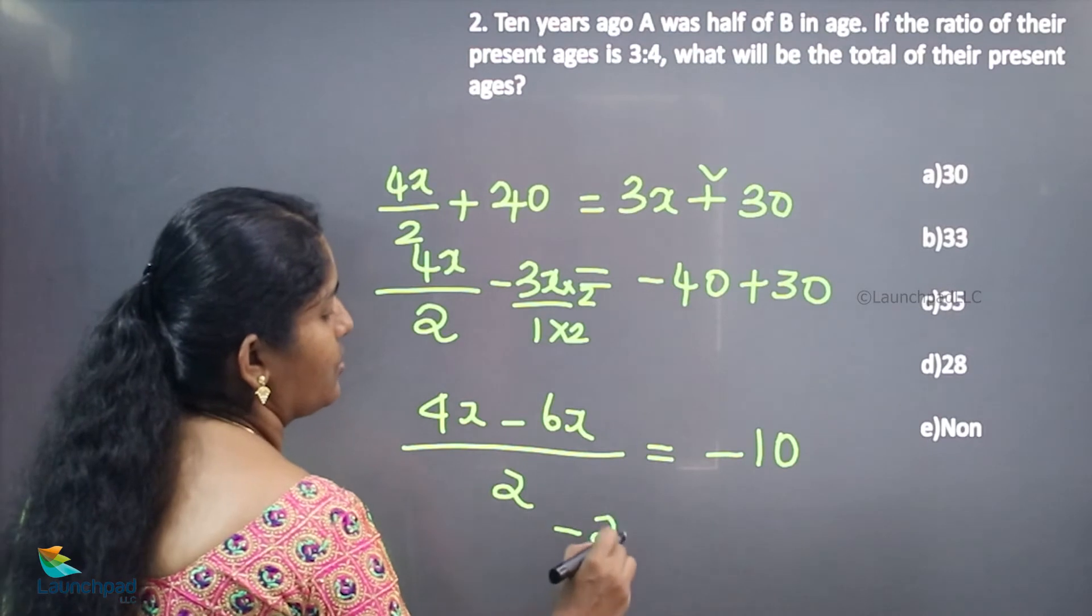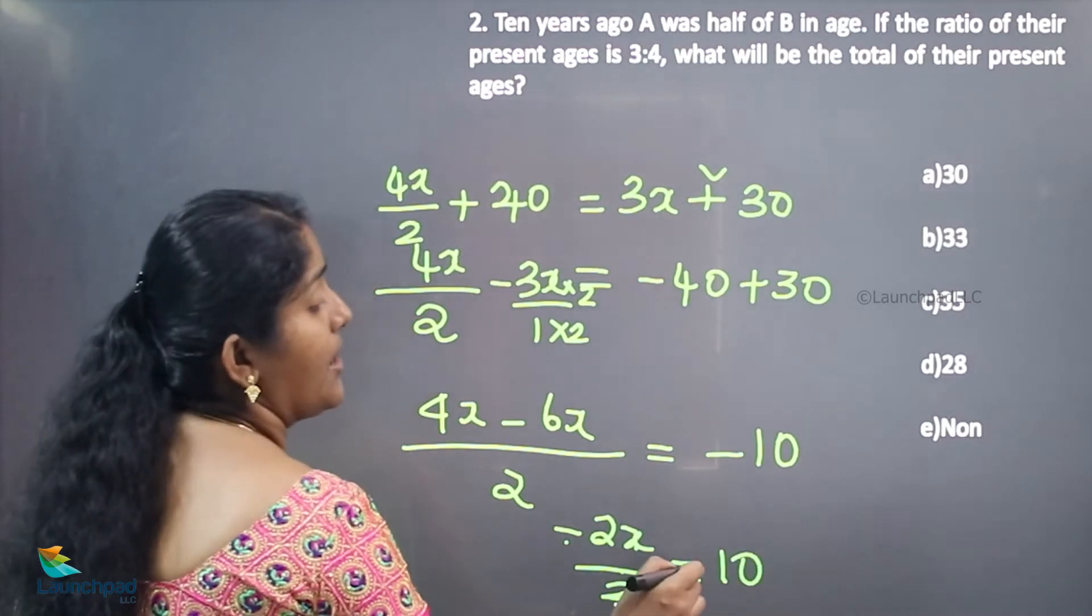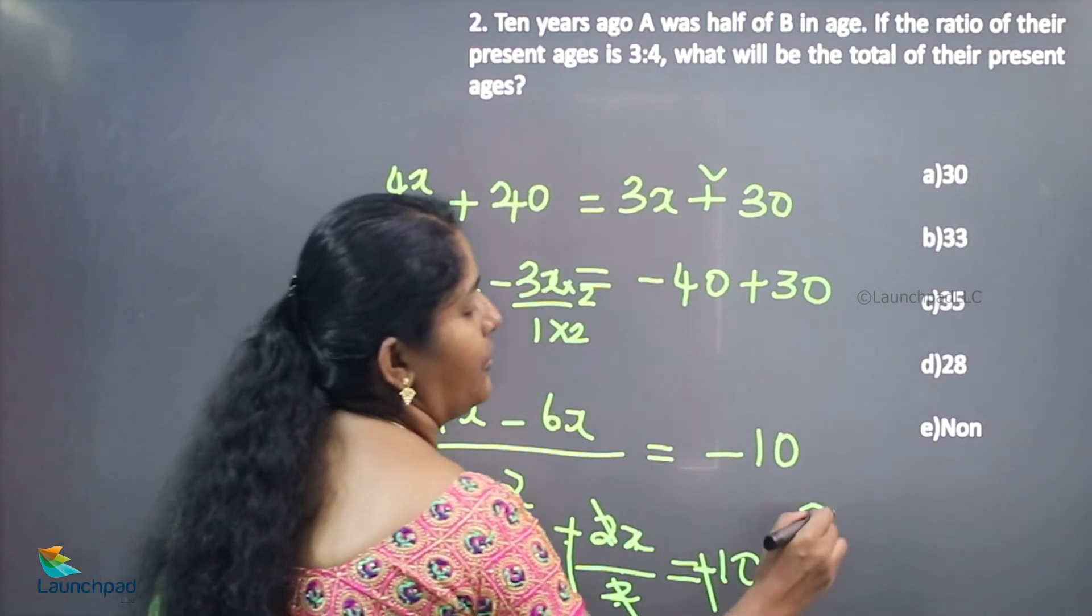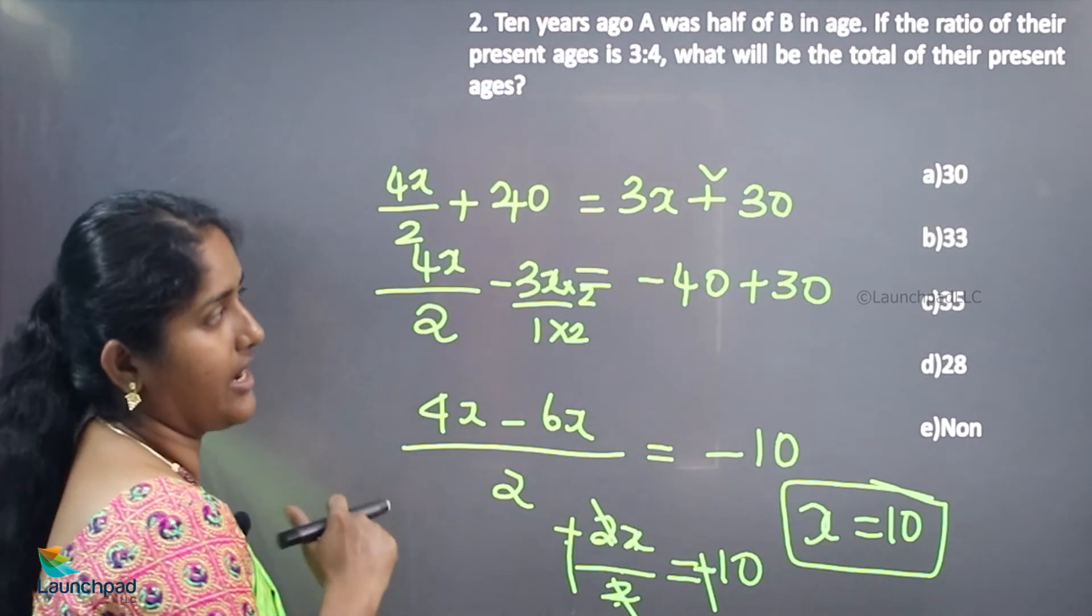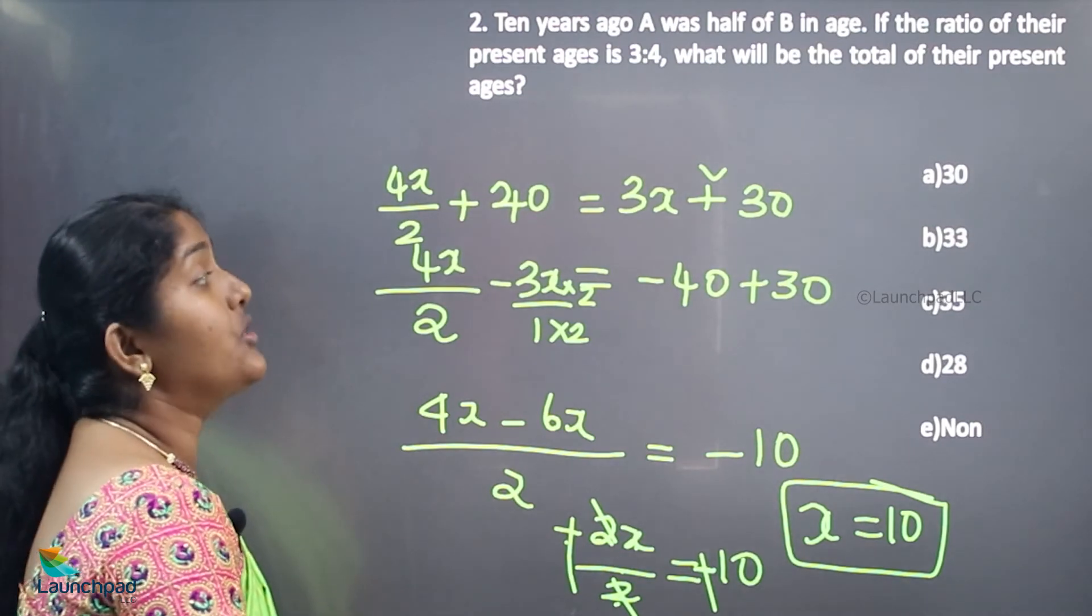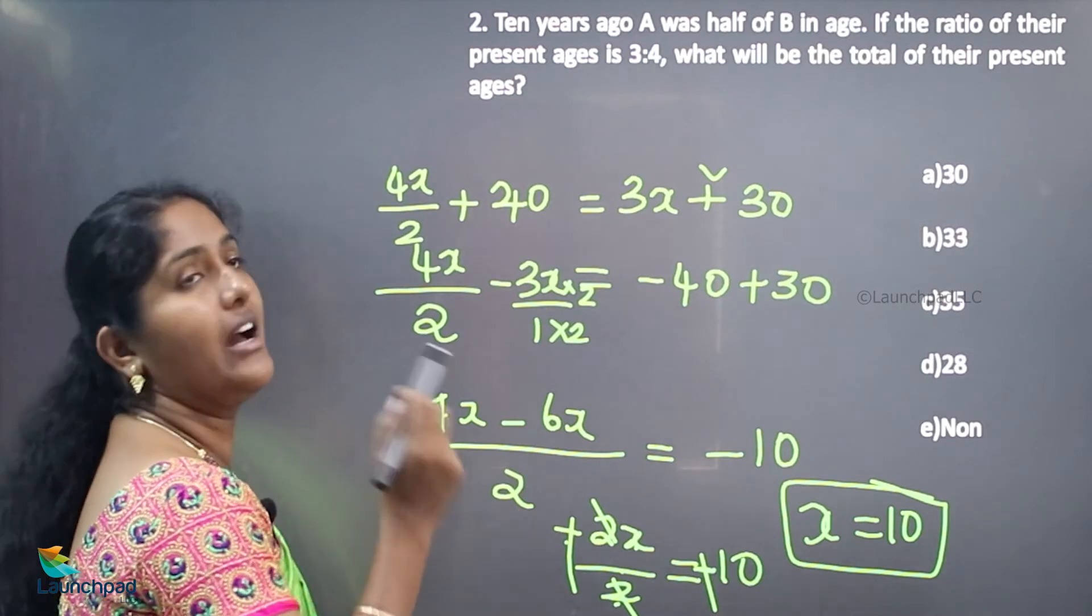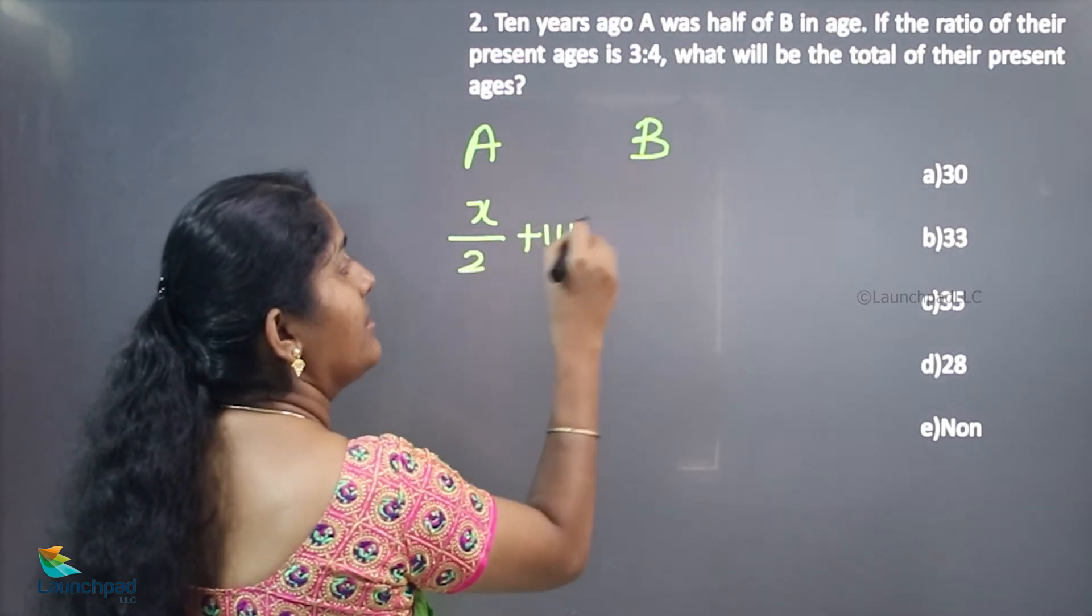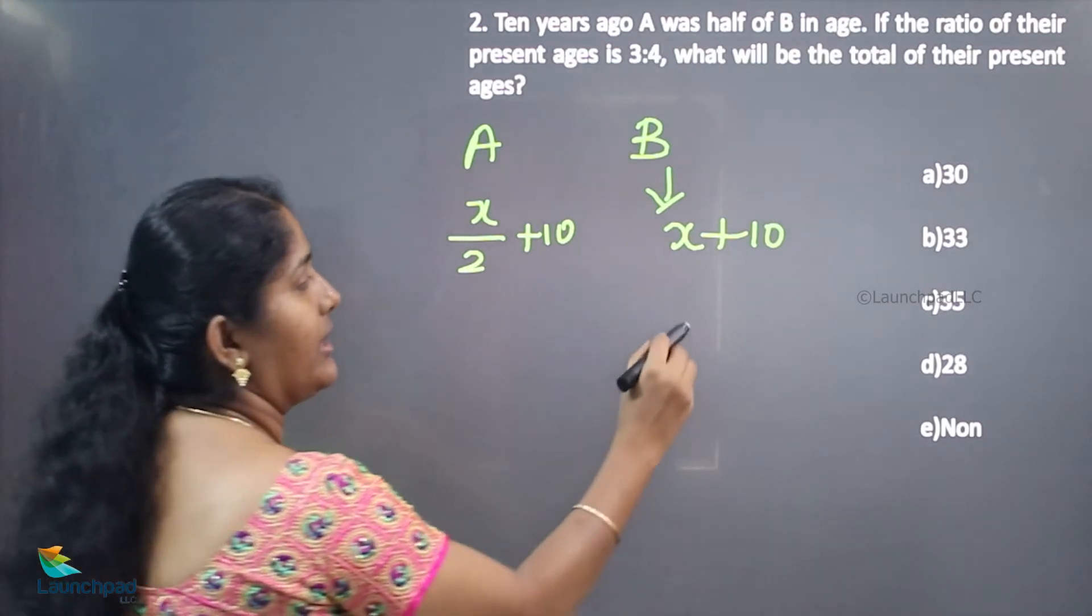So -2X/2 = -10, which gives X = 10. What will be the total of their present ages? The present ages are: A is X/2 + 10, and B is X + 10. The X value is 20.